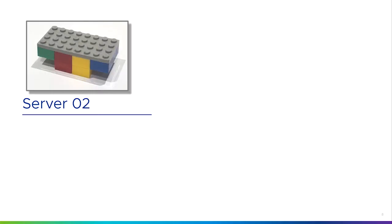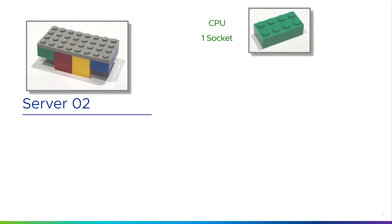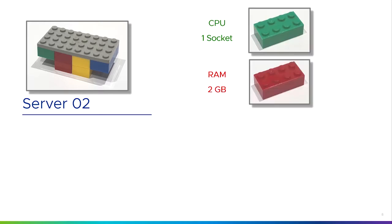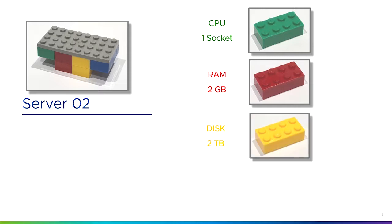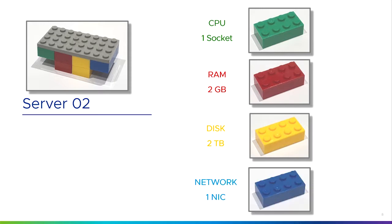Server number two is slightly different. It's still got one CPU, but now it's got two gigs of RAM denoted by the two red blocks, two terabytes of disk denoted by the two yellow blocks, and one network card. So server two just has a little bit more RAM and a little bit more disk.